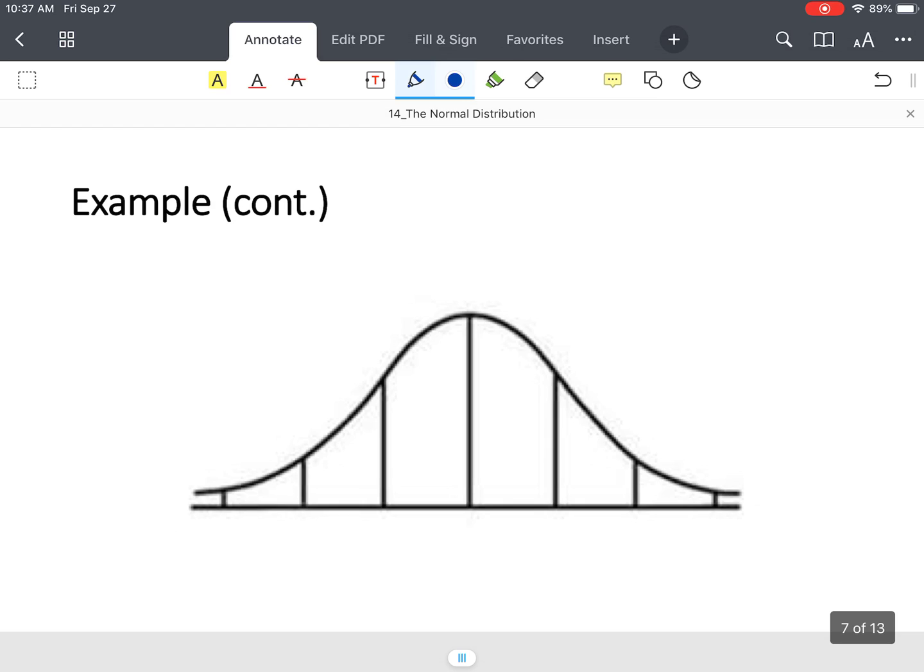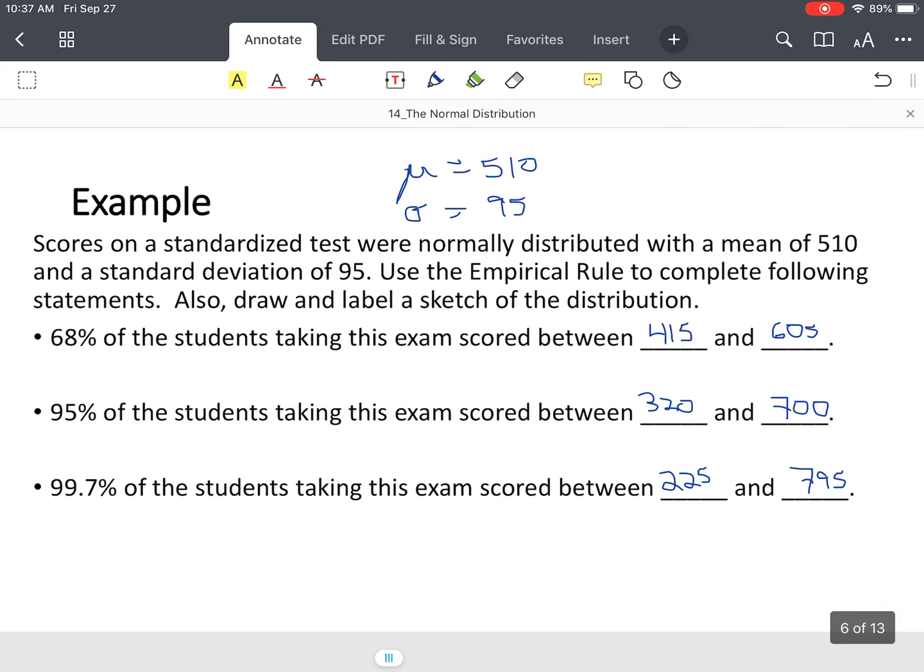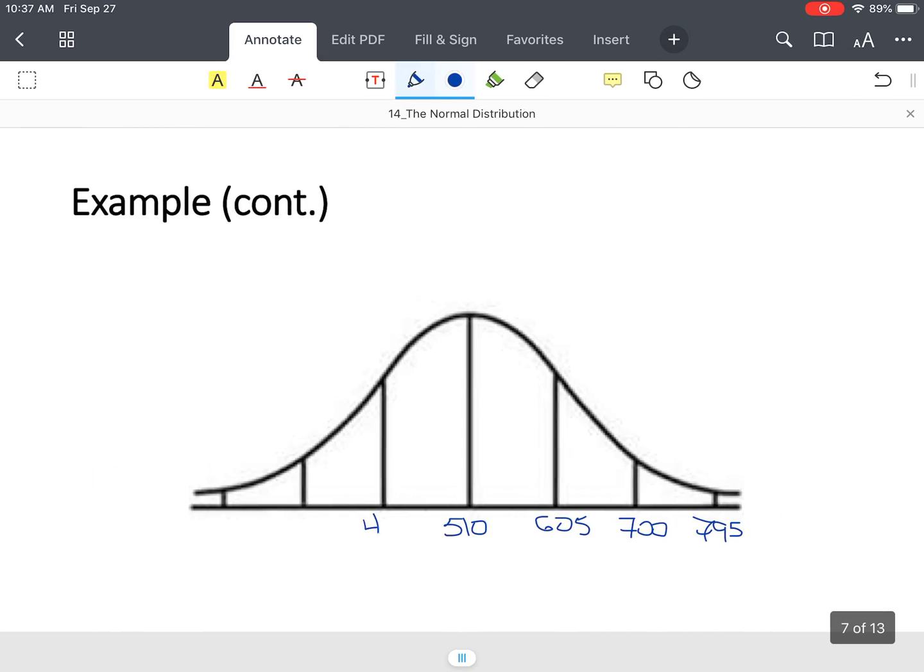Our mean was 510. Then we had 605, 700, and 795. To the left, we have 415, 320, and 225. In statistics, it's always important to always draw the curve, and I'm going to say it over and over again. Always draw the curve first, and then you can interpret. The empirical rule is easy once you have the curve.